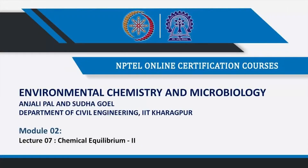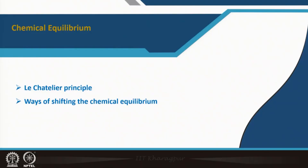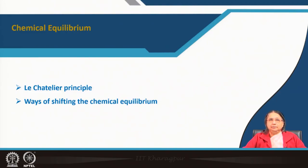In lecture number 7, under module 2, I will explain some aspects of chemical equilibrium. I have already discussed chemical equilibrium and how to set up the expressions for it. Now, in this lecture I will explain Le Chatelier's principle, which is very important in chemical equilibrium, and also how we can shift the chemical equilibrium — driving a reaction towards the forward or backward direction.